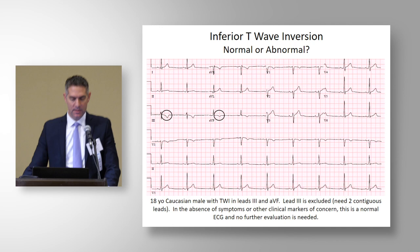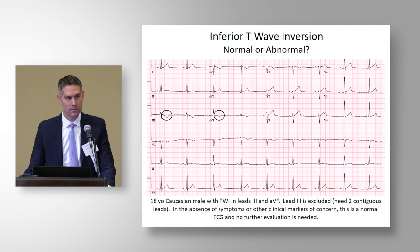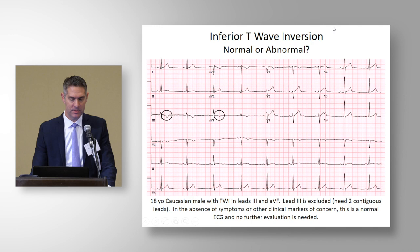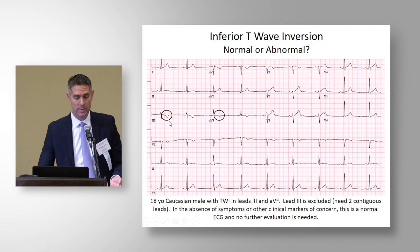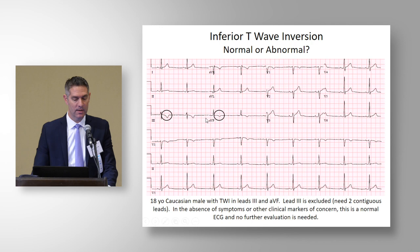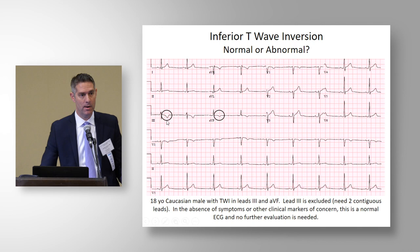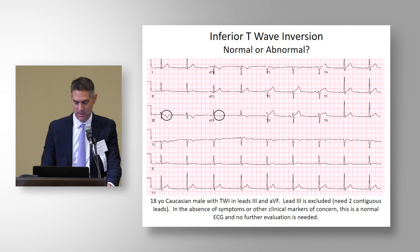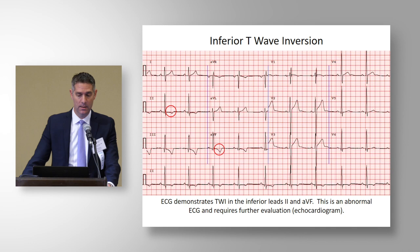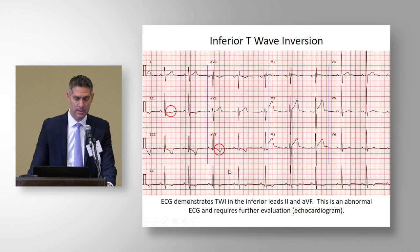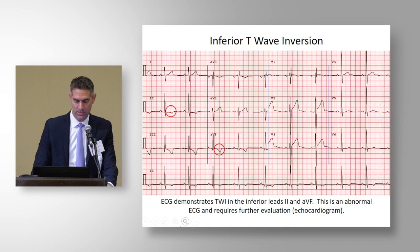Inferior T-wave inversion — when you look at this ECG, is it normal or abnormal? This is one of the challenging ECGs or potential pitfalls. We see T-wave inversion in AVF and lead three. But to truly meet the definition of inferior T-wave inversion as defined in the international recommendations, it has to be in two contiguous leads, and in the inferior leads that means two — excluding lead three. So this ECG in an asymptomatic athlete would not require more evaluation. In contrast, the next example of inferior T-wave inversion with inversion in AVF and lead two — two contiguous leads — would be considered abnormal and require further evaluation beginning with an echocardiogram.